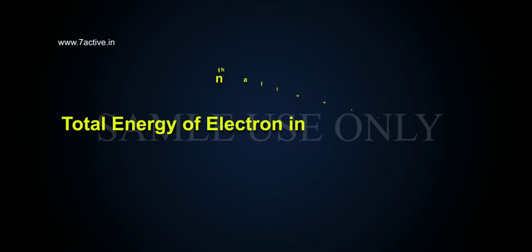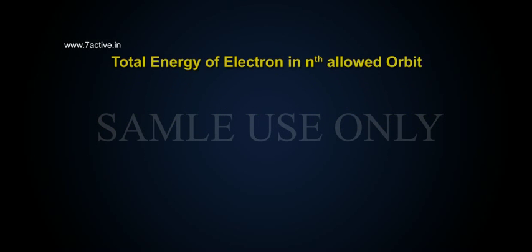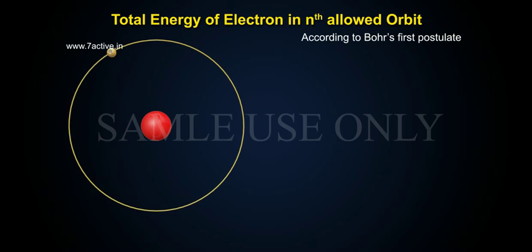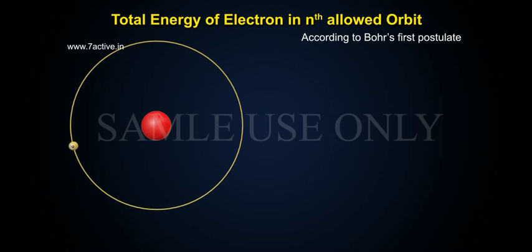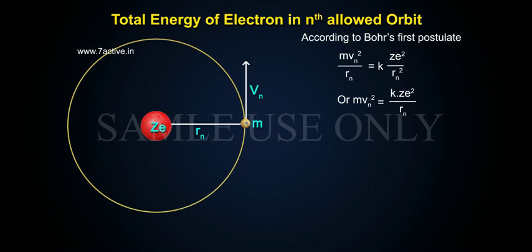12.4.2 Total energy of electron in nth allowed orbit. According to Bohr's first postulate, mv²/rn equals k·Ze²/rn², or mv² equals kZe²/rn.